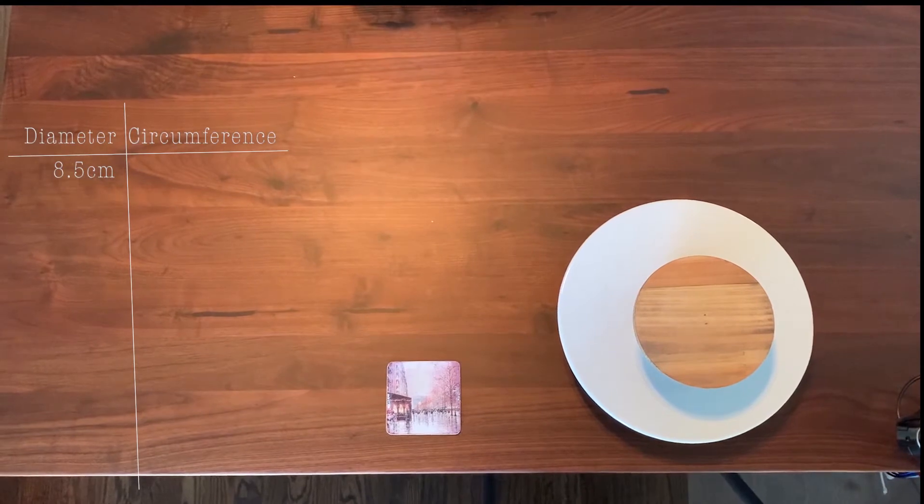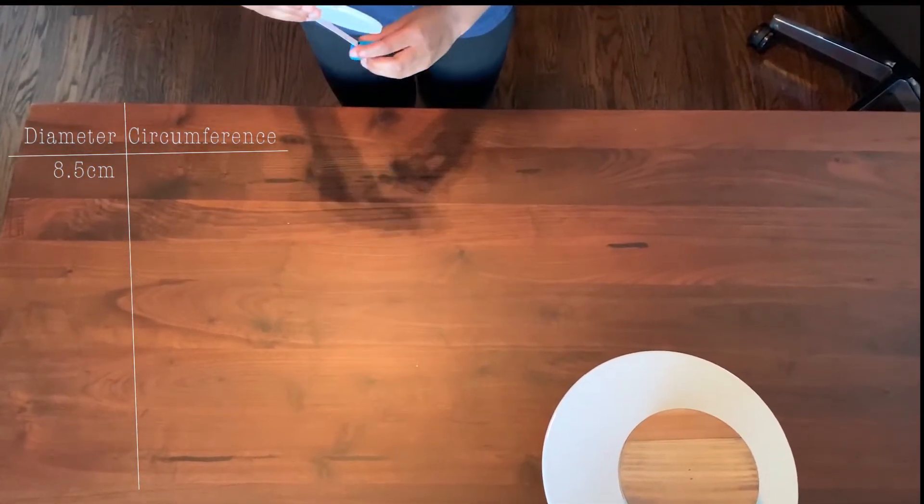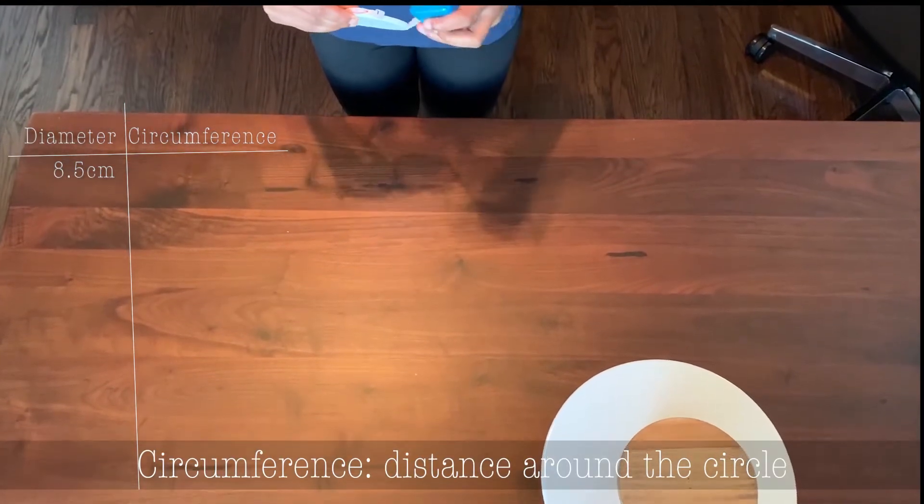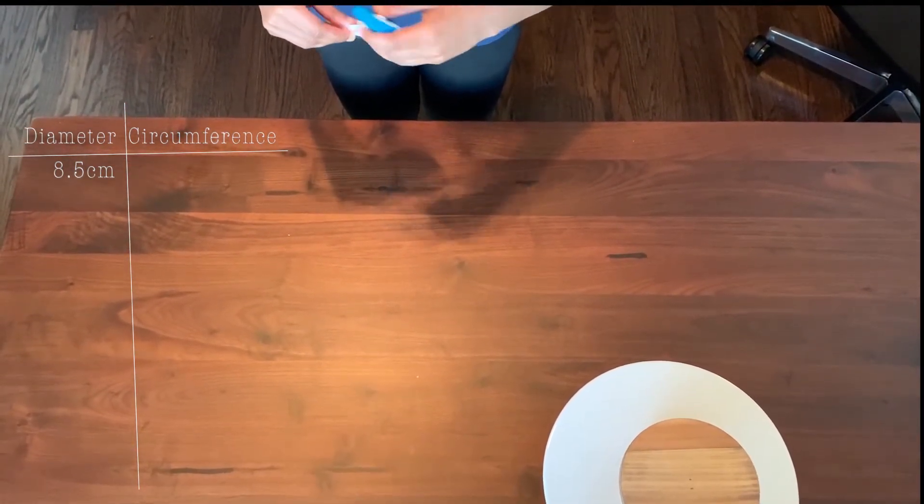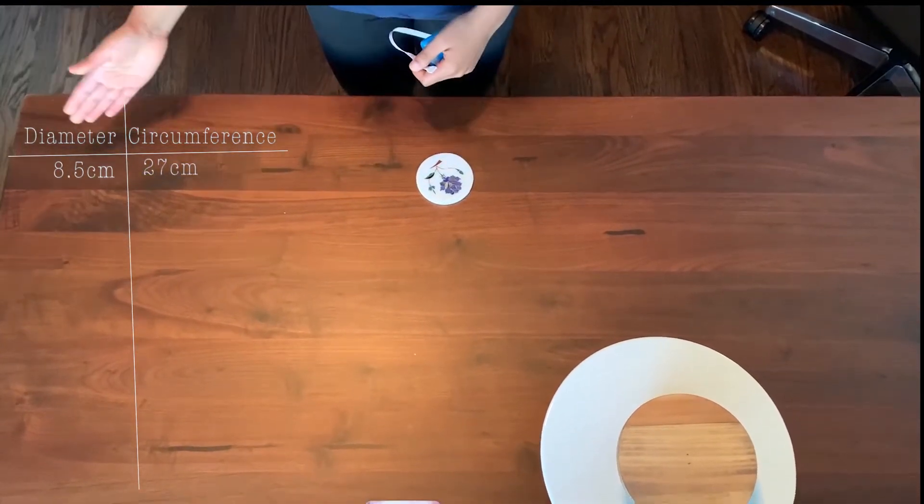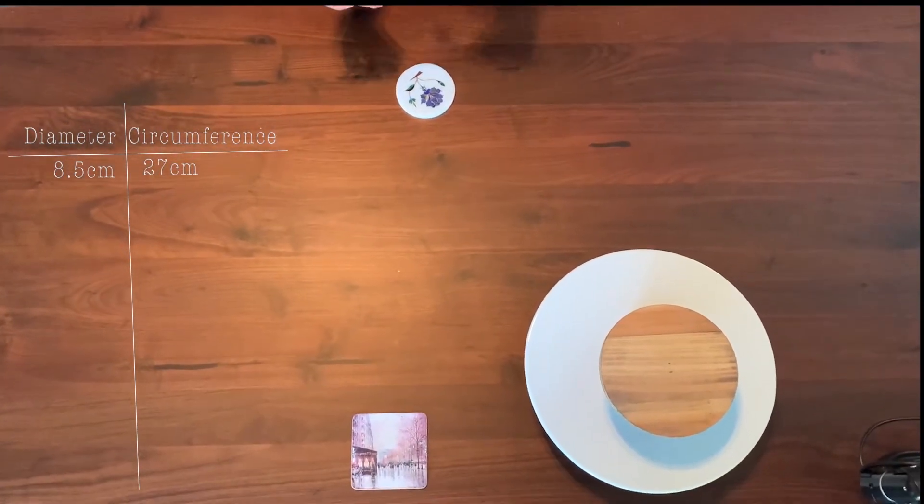Now, let's find the circumference of this circle. The circumference is the distance around a circle. So I'll do that by wrapping my measuring tape around the coaster. And from here, I get 27 centimeters. So we'll add the 27 centimeters to the circumference column of the table.